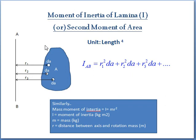To calculate moment of inertia of lamina, let us consider this lamina consists of number of elemental areas dA which are at a distance of r1, r2, r3 and so on from a reference axis. Then, moment of inertia about that reference axis will be r1 square into dA plus r2 square into dA and so on.